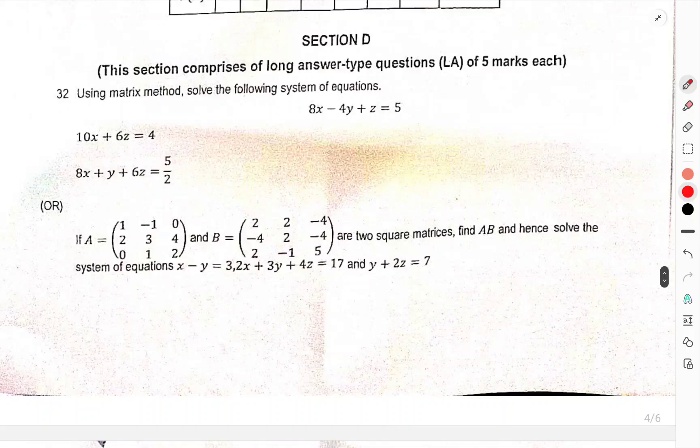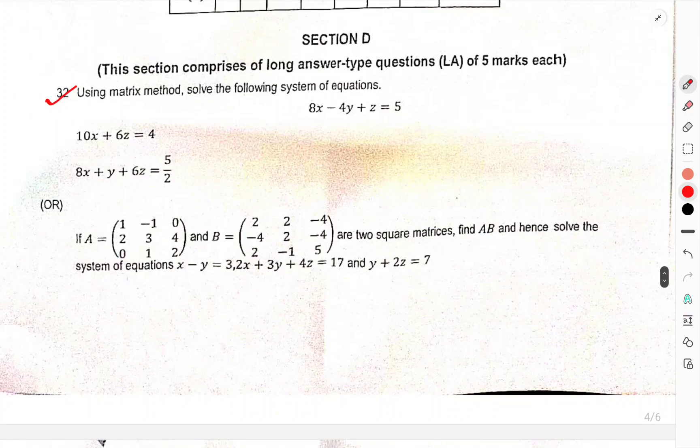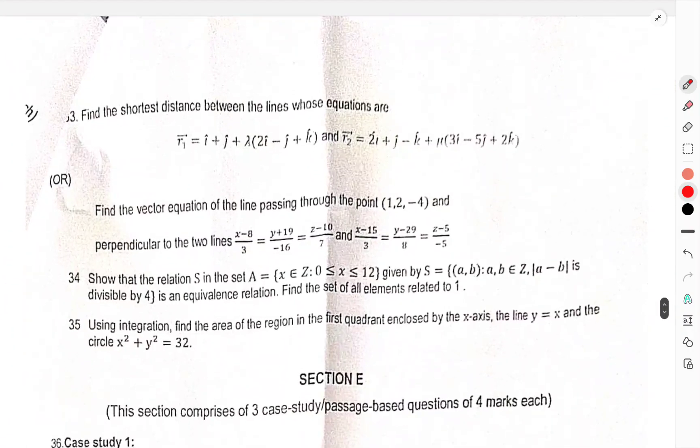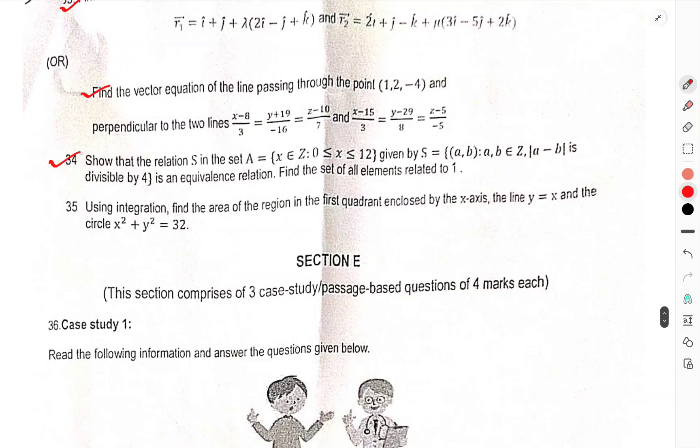Section D. Long answer question 5 marks each. Using matrix method, solve the following system of equations. Or this is two square matrix A and B. Hence, this solve the system of equations. X minus Y is 32. X plus 3Y plus 4Z is equal to 17. X plus 2Z is 7. Find the shortest distance between the lines. Suppose equations are this. Or the vector equation of line passing through the point 1 2 minus 4. And the probability of two lines is this. So that the relation S is this. Of all elements of 40 to 1. Using the integration, find the area of the region of the first quadrant equals X and Y which equals to X. Or the circle is this.